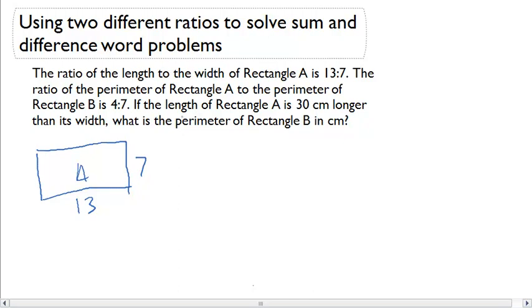We also know that the length of Rectangle A is 30 centimeters longer than its width. So it's a difference. We can do 13 minus 7, which is 6 units. And if I have the difference of 30, 30 divided by 6 is going to be 5 centimeters per unit.